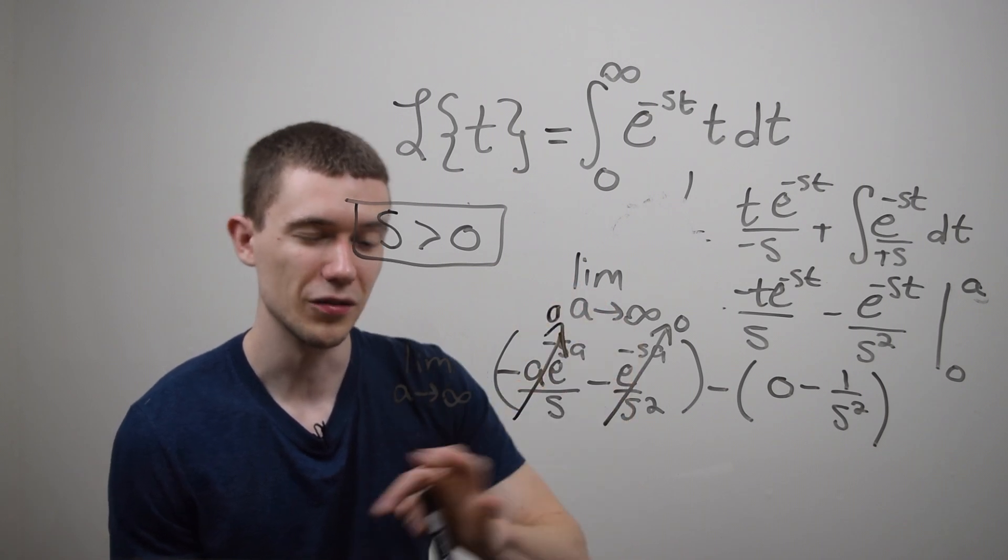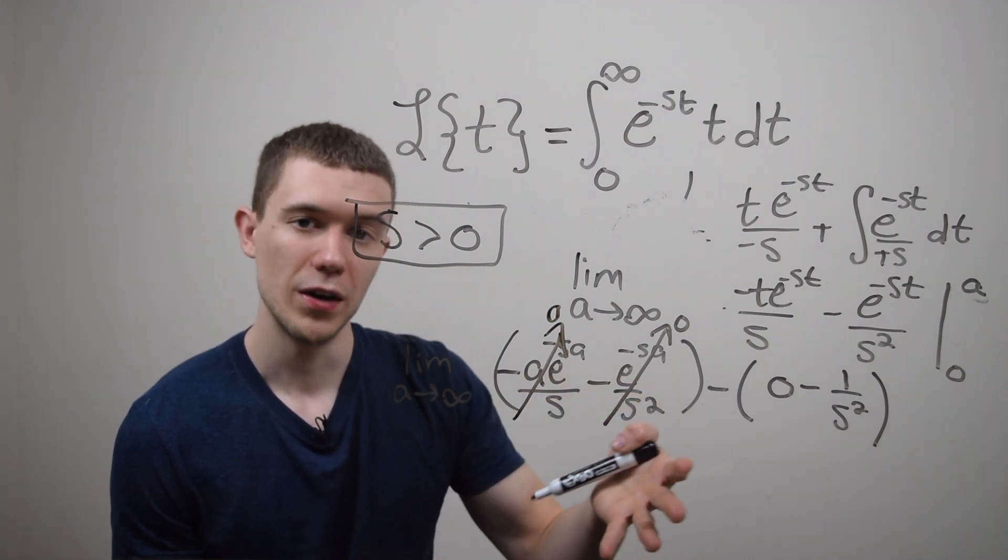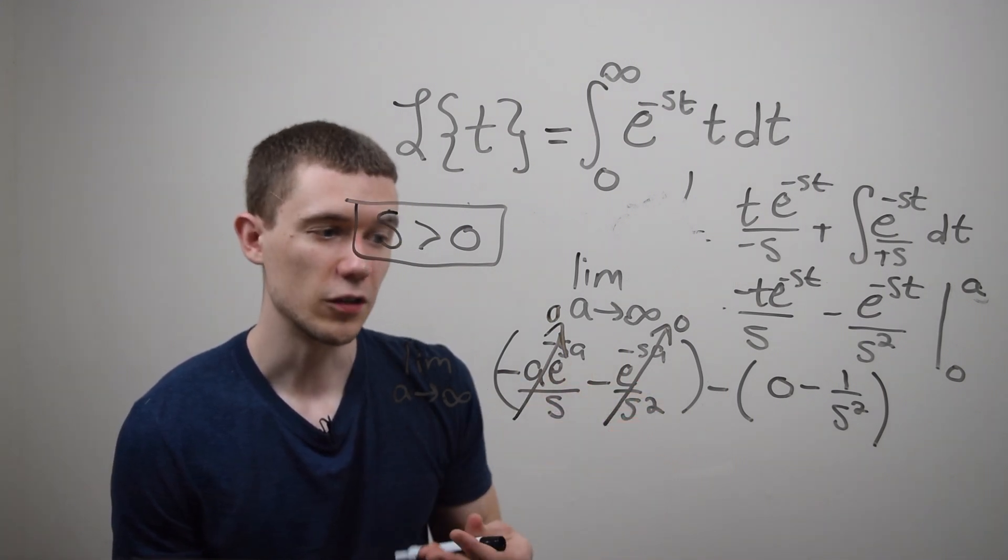Since e goes faster than a does the e function sort of takes over and this one is just going to go to zero as well. So it's sort of a bad argument for that but if you have an intuition about how limits work that's what's going to happen here.